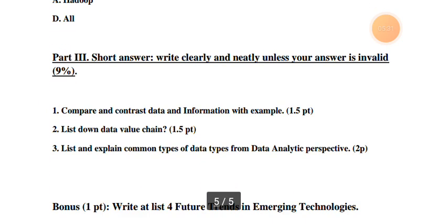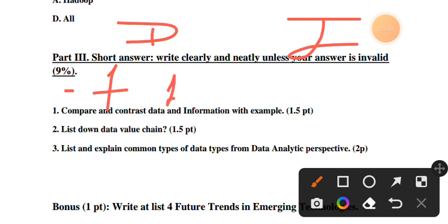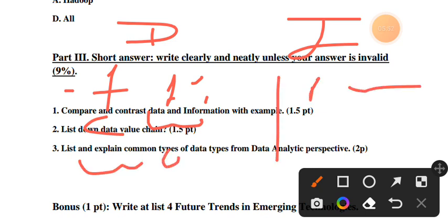Part three, short answer: Compare and contrast data and information with examples. Data is the representation of facts, figures, characteristics, and words. Information is processed data - data that has been processed to be meaningful.